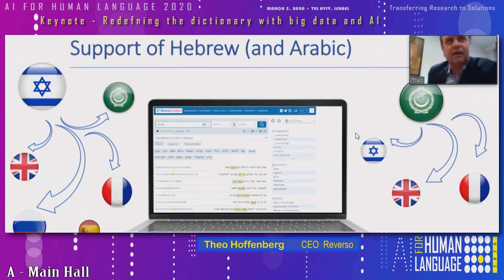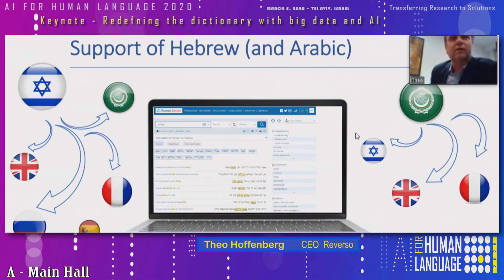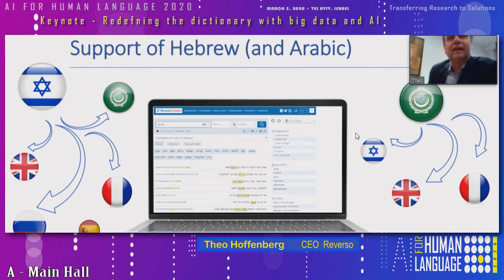We are one of the only tools with worldwide exposure that has real support for Hebrew. We have not only Hebrew-English — as you can see with Morphix, for example — but we give you much more than Morphix. We also have Hebrew to French, Russian, and Arabic, covering the main languages used in Israel, and Arabic to French, English, and Hebrew as well. Very few tools have this coverage and offer world-class support for these types of languages.